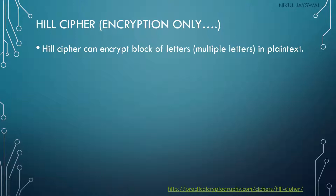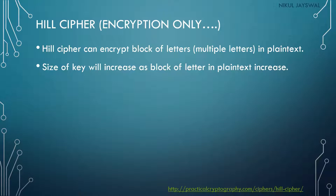The Hill cipher can encrypt a block of multiple letters from the plain text at a time. In Caesar cipher we encrypt one letter at a time; in Playfair cipher we encrypt two letters simultaneously; in Hill cipher we can encrypt multiple letters. For example, if the plain text has 10 characters, we can take the first three characters to encrypt, then the next three, and so on. The size of the key increases as the block size increases.